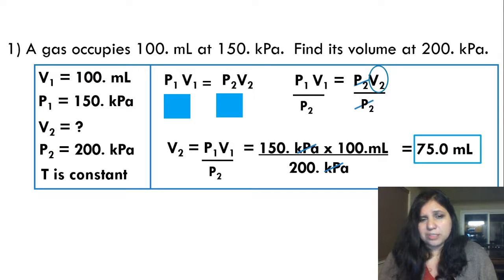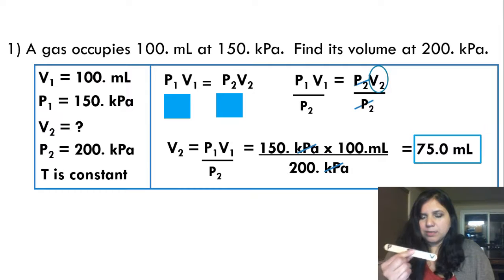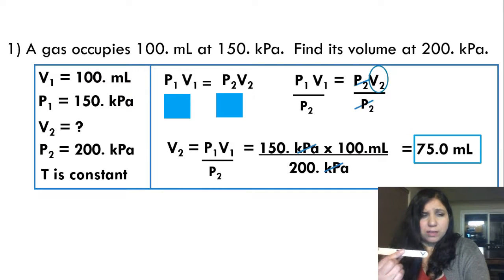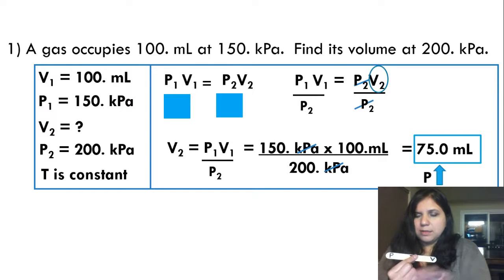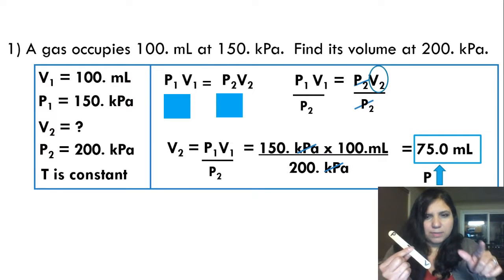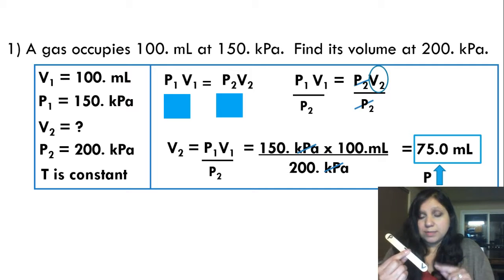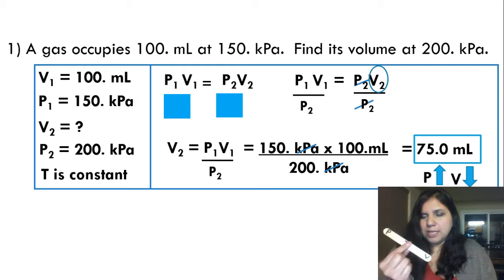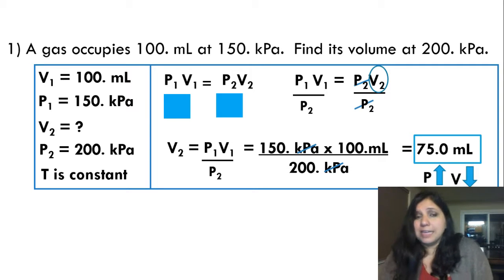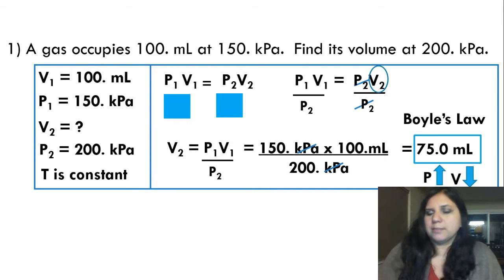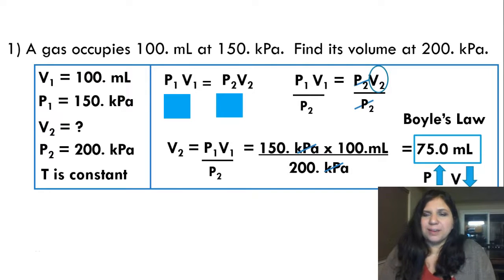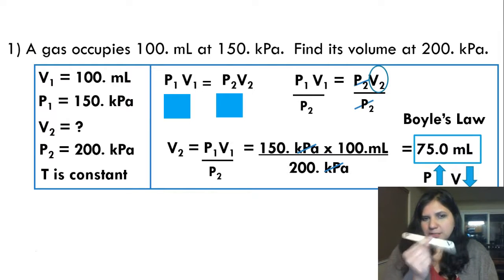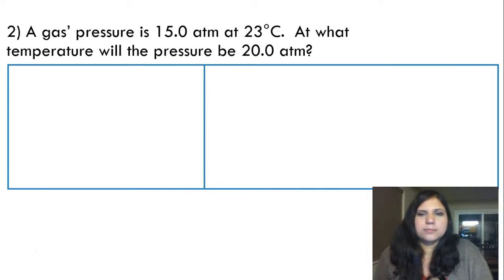Let's check if the answer makes sense. Pressure went from 150 to 200 kPa — that's an increase. Volume went from 100 to 75 mL — that's a decrease. According to Boyle's Law, as pressure goes up, volume goes down. That is an inverse relationship, so this makes sense. We also need to identify which law: Boyle's Law holds temperature constant.